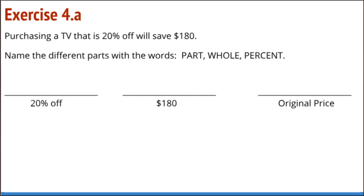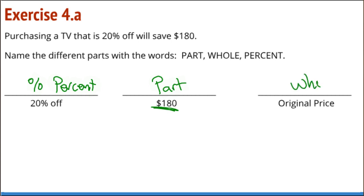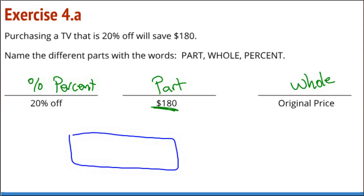Purchasing a TV that is 20% off will save $180. We're going to name the different parts: 20% off is a percent — not an actual dollar amount. The $180 is a part — it's part of the price that will be subtracted. The original price is going to be a whole — the total of the original price. Looking at the tape diagram, we can see how all this fits together.